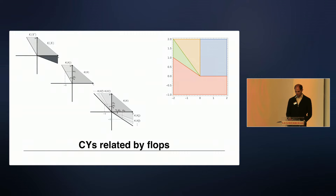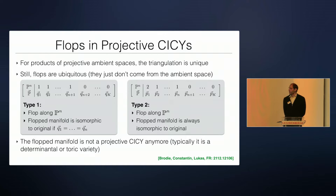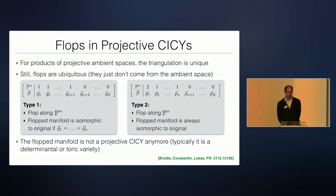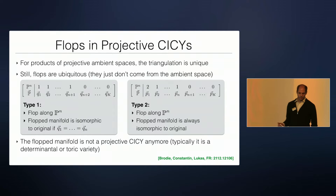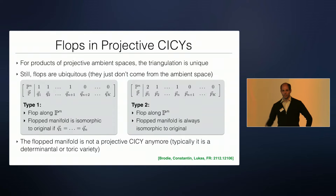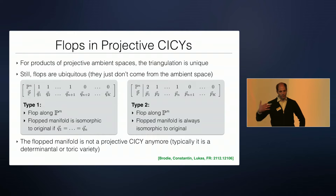Let's look at Calabi-Yaus related by flops. These are very easy to generate — you already get them in products of projective ambient spaces. In the most naive picture this might be a little surprising, because projective ambient spaces have a unique triangulation. So you precisely do not get the case where the flop is induced by an ambient space flop. These are all cases where the flop is only essentially on the Calabi-Yau.